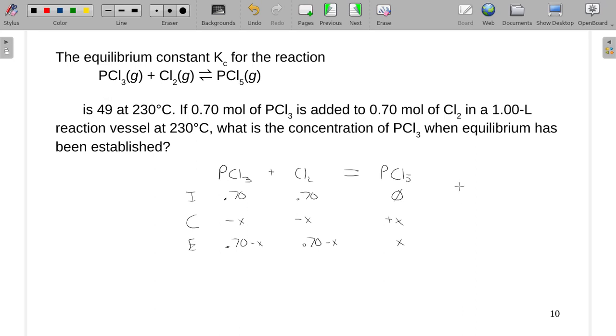Alright, so we have a K, or a Q for this reaction, of the concentration of PCL5 all over the concentration of PCL3 and CL2. Alright, when I plug in the 49, I get this horrible equation that would turn into a quadratic.